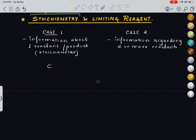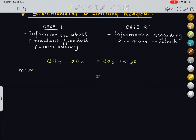We will understand with the help of one example. We have the equation CH4 plus O2 giving CO2 plus H2O — this is a combustion reaction of methane. Let's balance it: CH4 plus 2O2 giving CO2 plus 2H2O. According to stoichiometry, 1 mole of methane is reacting with 2 moles of O2 to give 1 mole of CO2 and 2 moles of water.